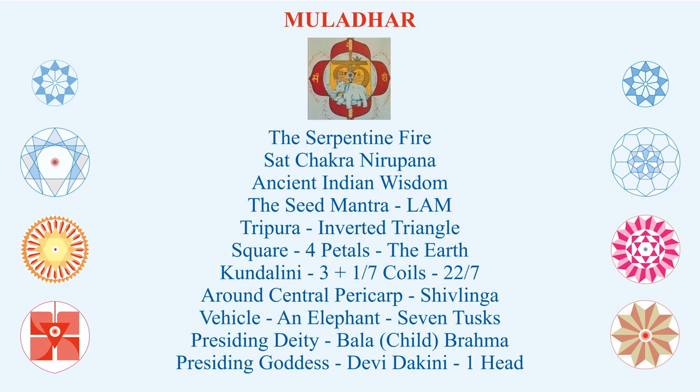Another element that stands out is a vehicle — an elephant with seven tusks. The presiding deity of Mooladhara Chakra is Bhala Brahma or Child Brahma, meaning the first stage of creation, which is closely associated with procreation. The presiding goddess of this center is Devi Dhakni with one head. One-headed Devi Dhakni represents the first chakra. In Sat Chakra Nirupana, you will see the Devi with two, three, four, five, up to six heads — this is the first, representing the first foundation chakra.